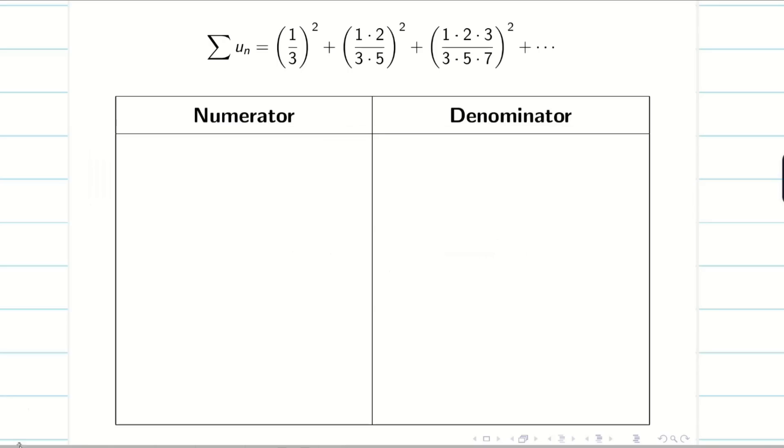Now we have to find the numerator and denominator. The first term 1, second term 1·2, third term 1·2·3, it goes on. Obviously, my nth term is n. But this is an increasing term series. So in nth term, how many terms you have? 1, 2, 3, up to n. This is my nth term in the numerator. You should be very cautious.